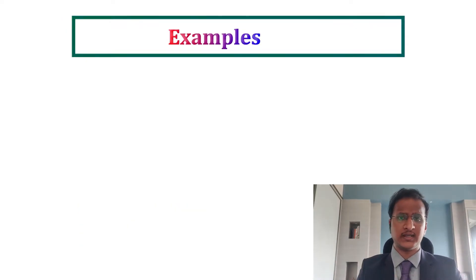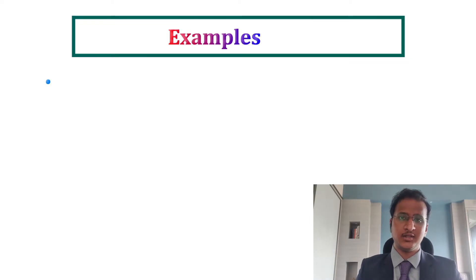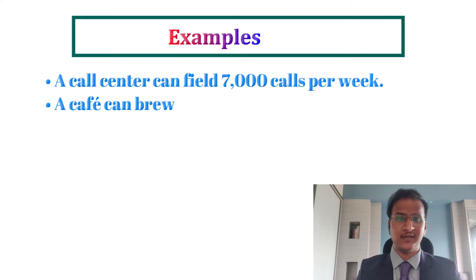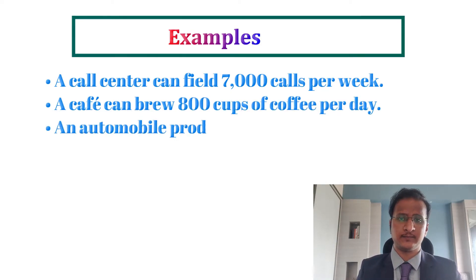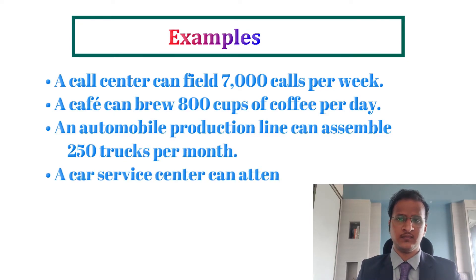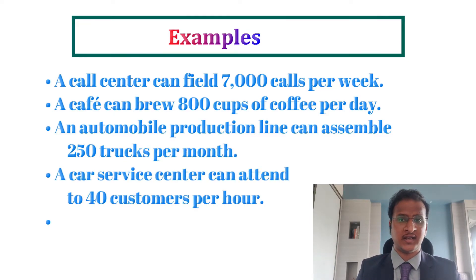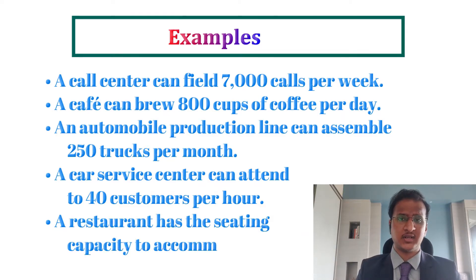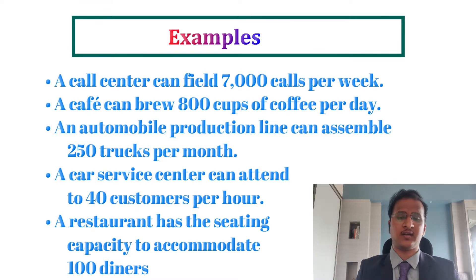Let's look at a few examples of Capacity Management. A call center can field 7,000 calls per week. A cafe can brew over 800 cups of coffee per day. An automobile production line can assemble 250 trucks per month. A car service center can attend to 40 customers per hour. A restaurant has the seating capacity to accommodate over 100 diners.